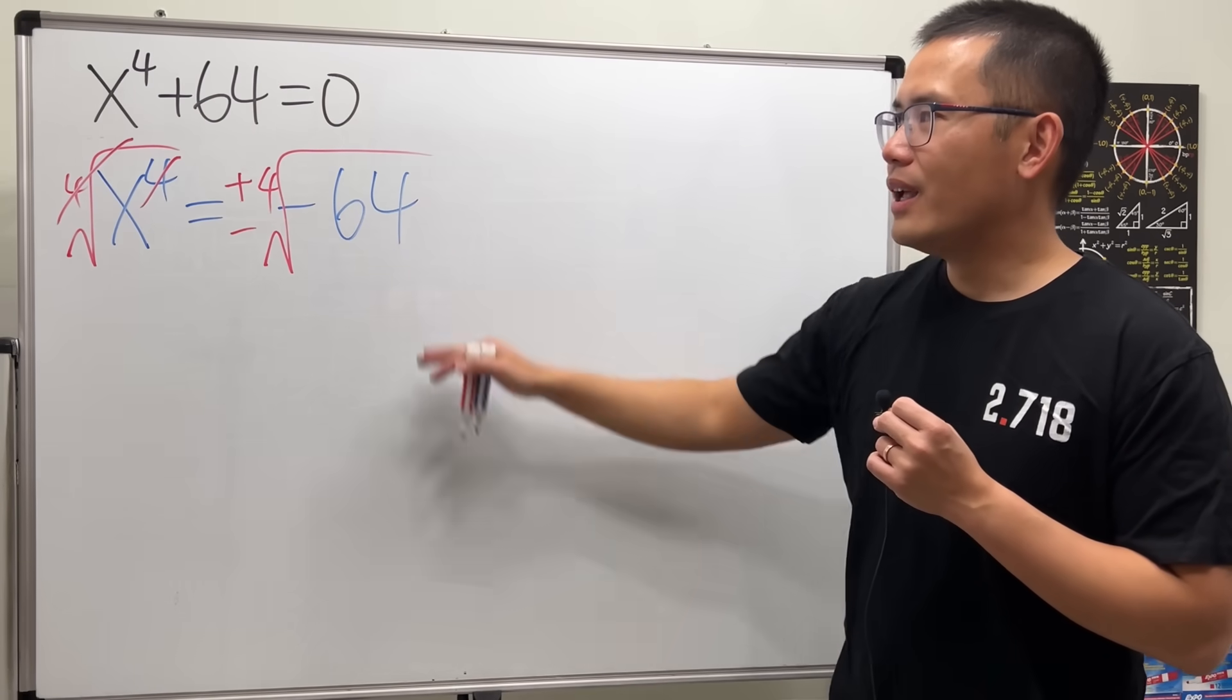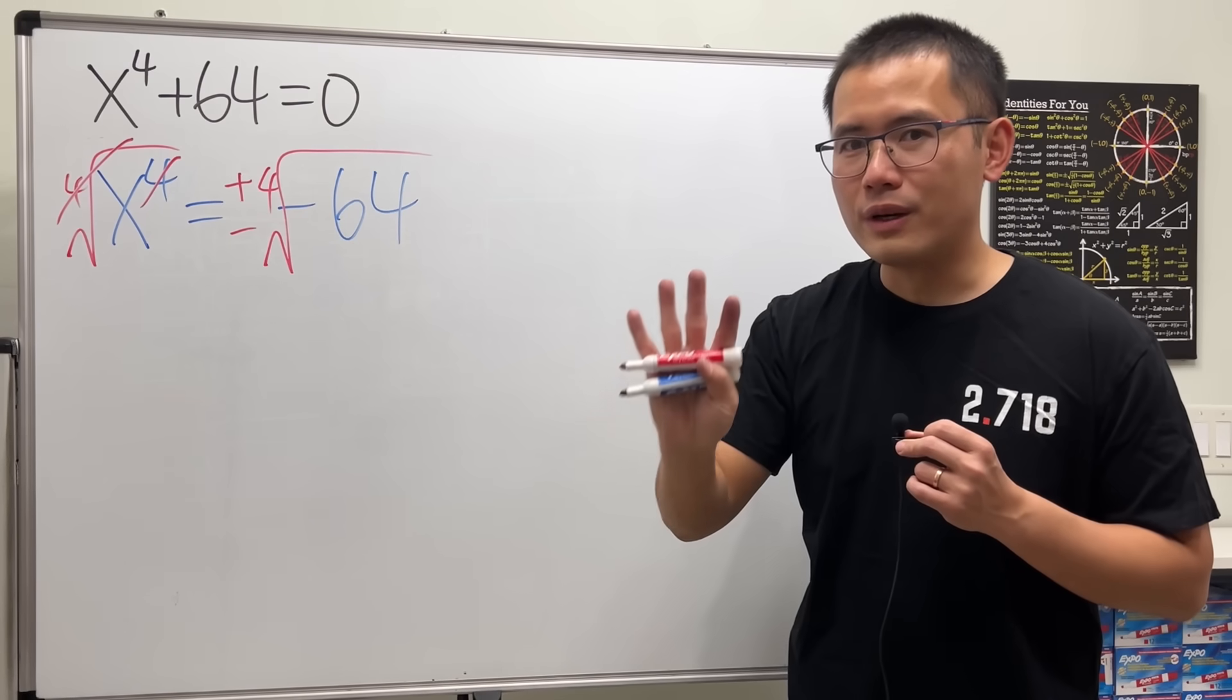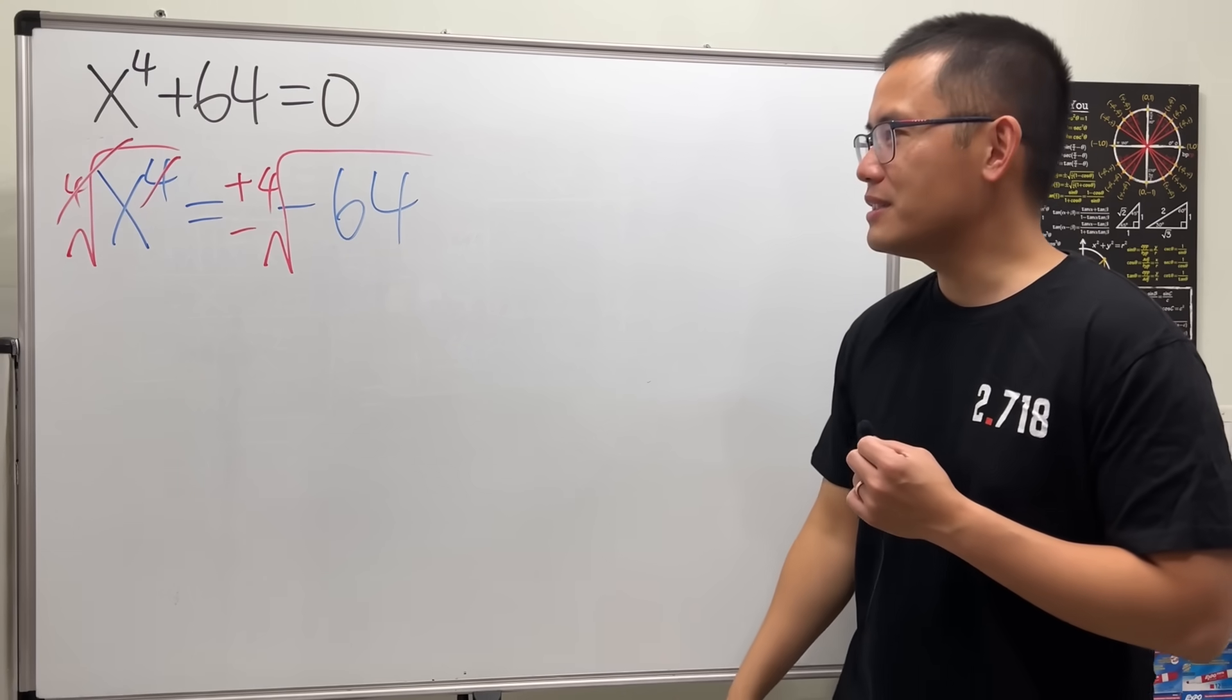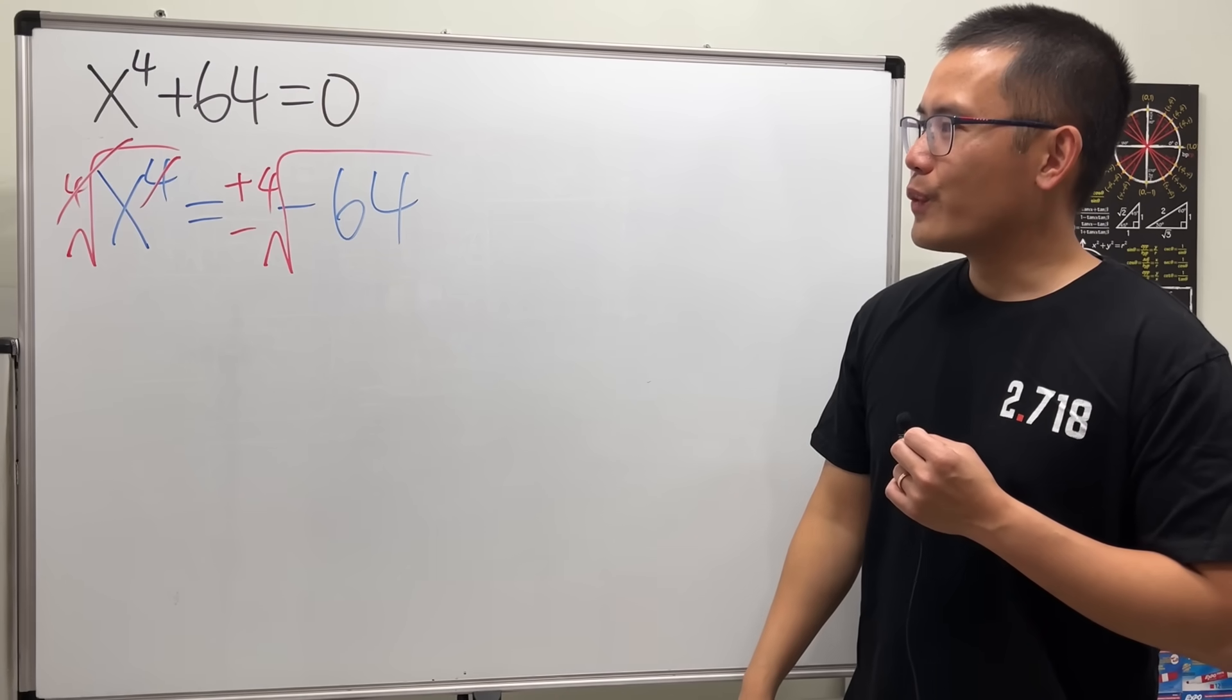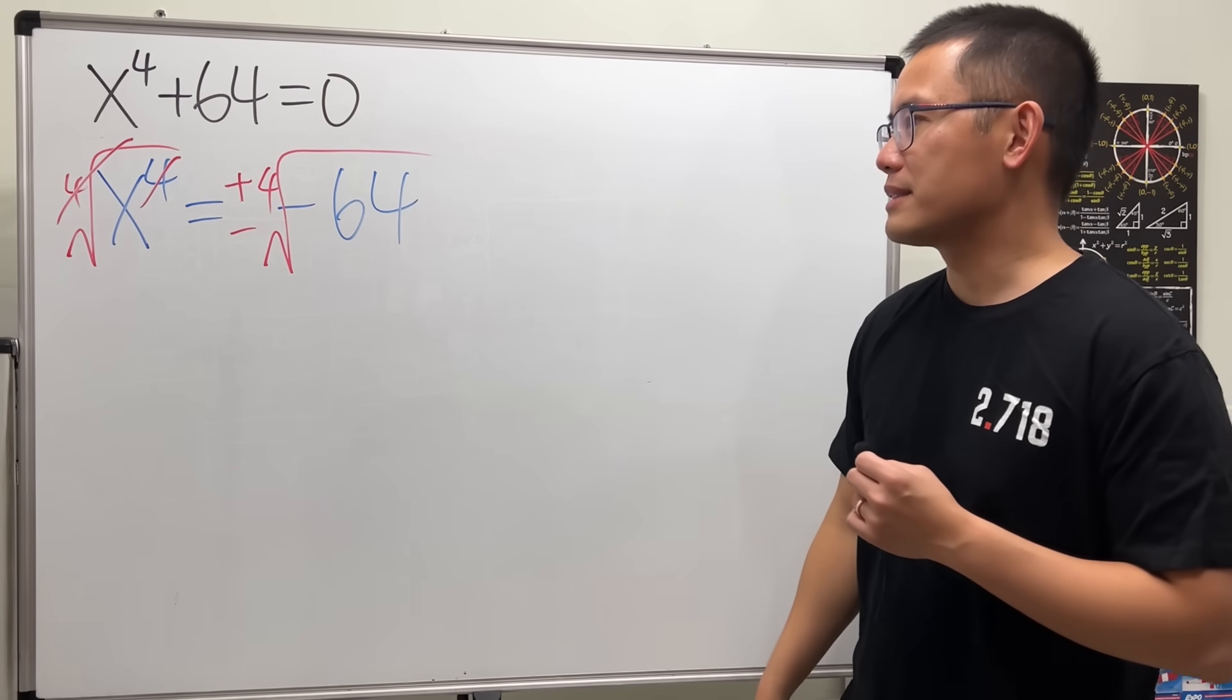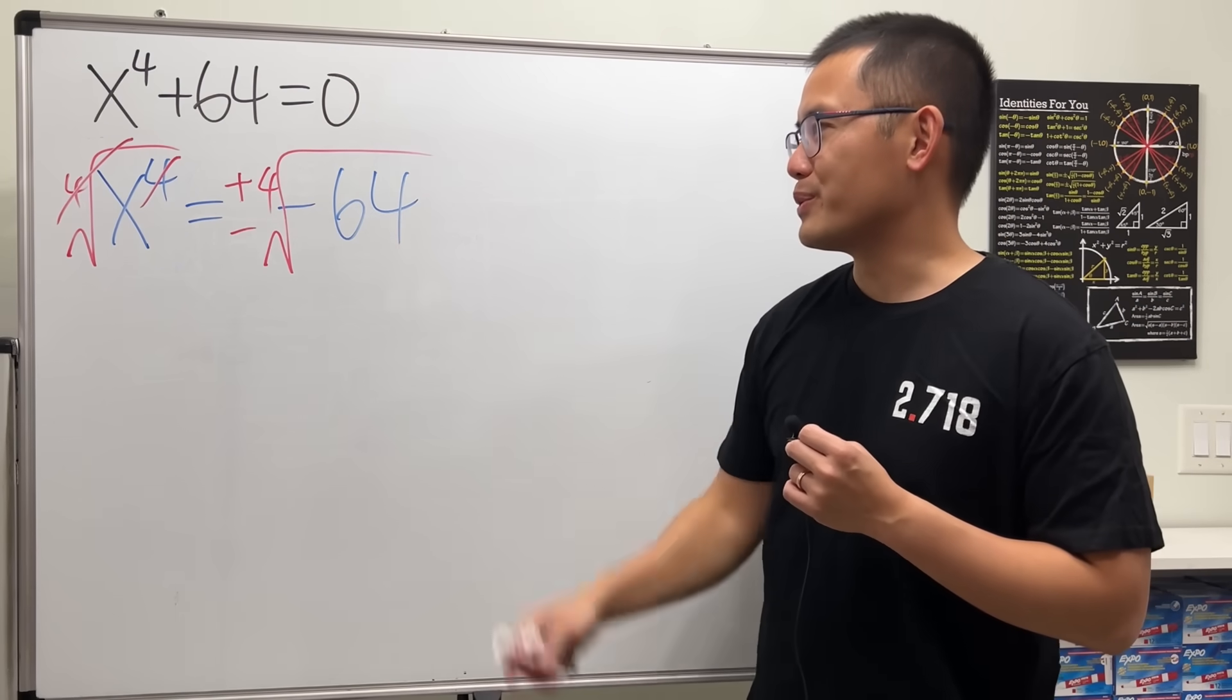And by the way, all together we will have four different non-real solutions. Of course, they are called the complex solutions. So, we should really write them down in terms of a plus bi for a complex number. Try not to do this.